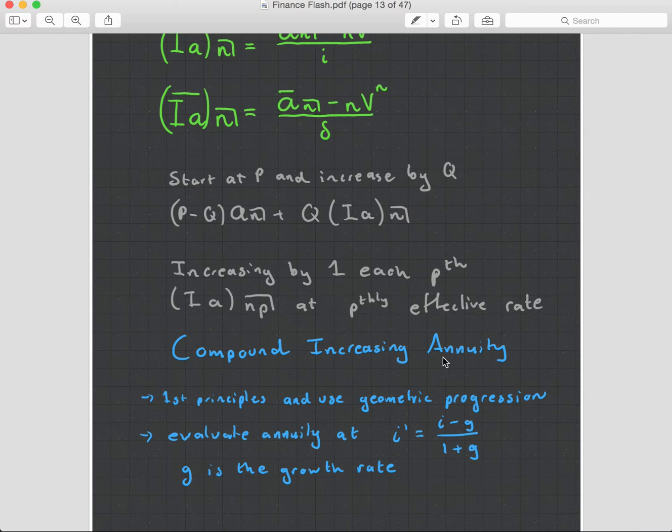So that's compound increasing annuities. They are easy. The test will try and make it difficult by saying when it does apply or they'll make the interest rate change halfway in. But you should be able to handle that after doing a few exam questions and practicing this stuff.